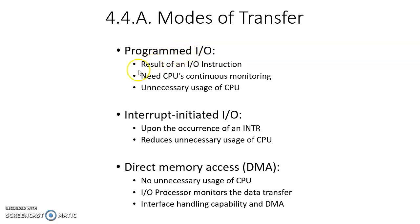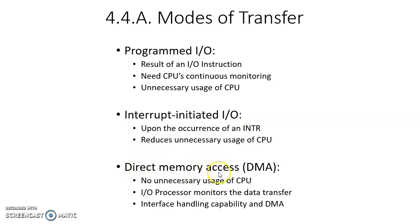Here we are going to look at three different modes of data transfer. One is programmed input/output data transfer, another is interrupt initiated IO data transfer, and the third is direct memory access data transfer. These are the three different ways in which data can be transferred between memory and IO devices.